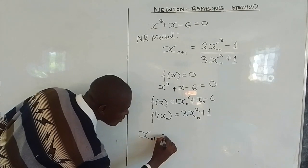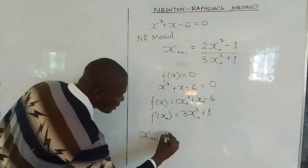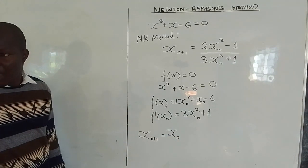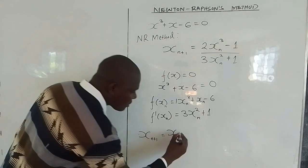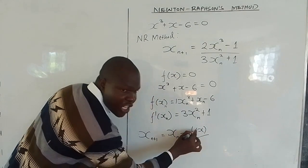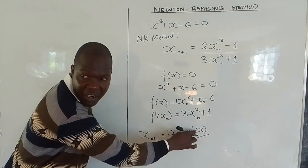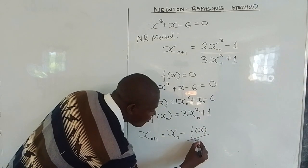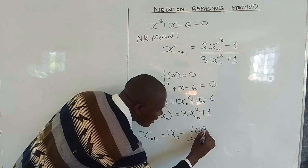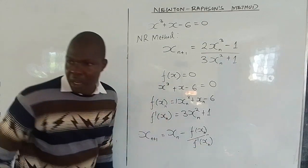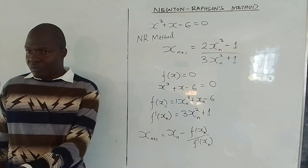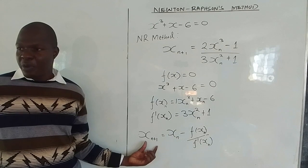In the Newton-Raphson method: xn+1 = xn - f(xn) / f'(xn). You differentiate f(x) to get f'(x), then you add n. This is the Newton-Raphson formula.